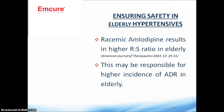Ensuring safety in elderly hypertensives: racemic amlodipine results in a higher R-to-S ratio in the elderly, causing accumulation of R-isomer which leads to adverse effects and causes elderly patients to stop taking the medicine. With a single isomer drug containing only the S-isomer, there will be less incidence of adverse events in the elderly, ensuring better compliance for hypertension treatment.